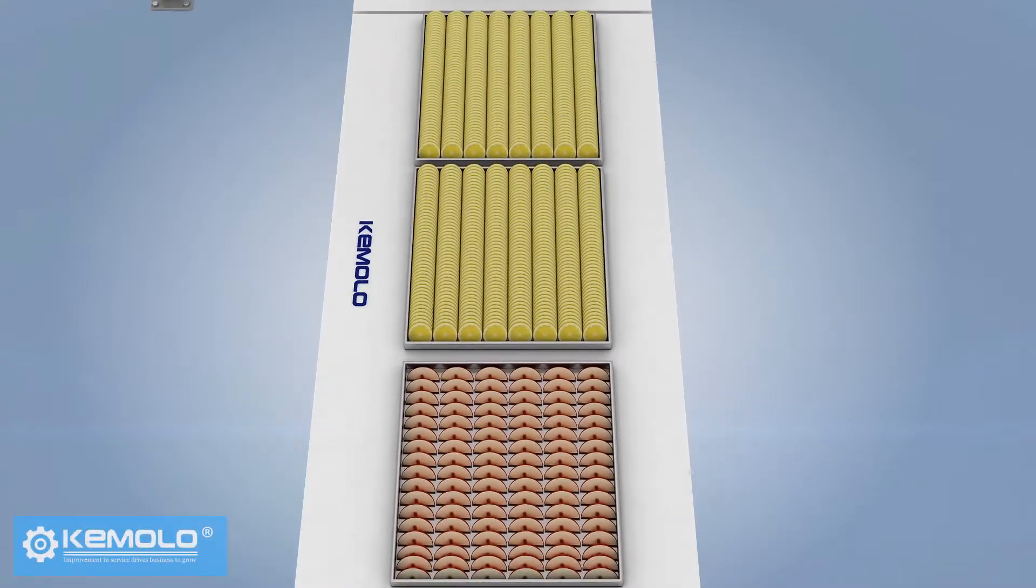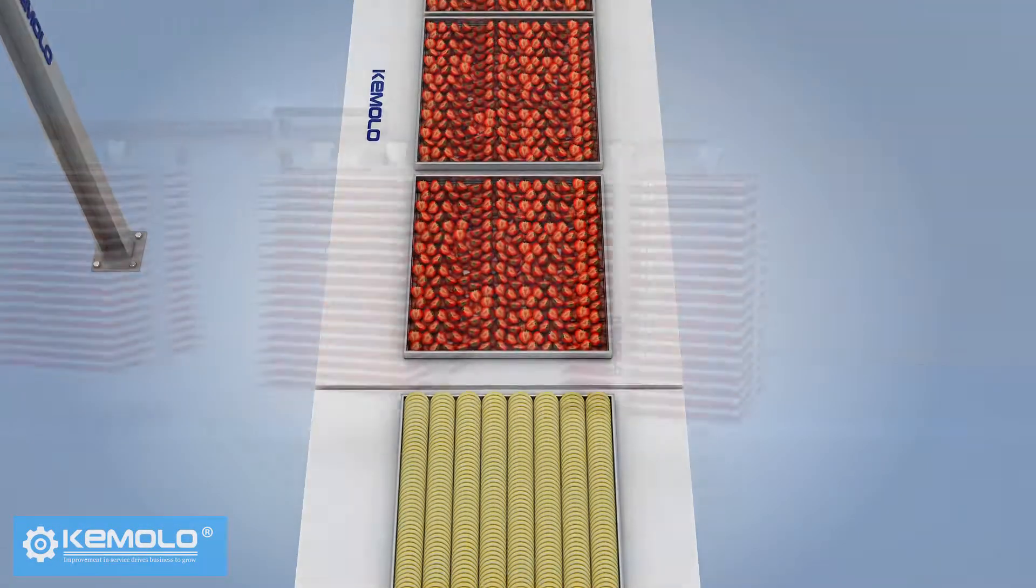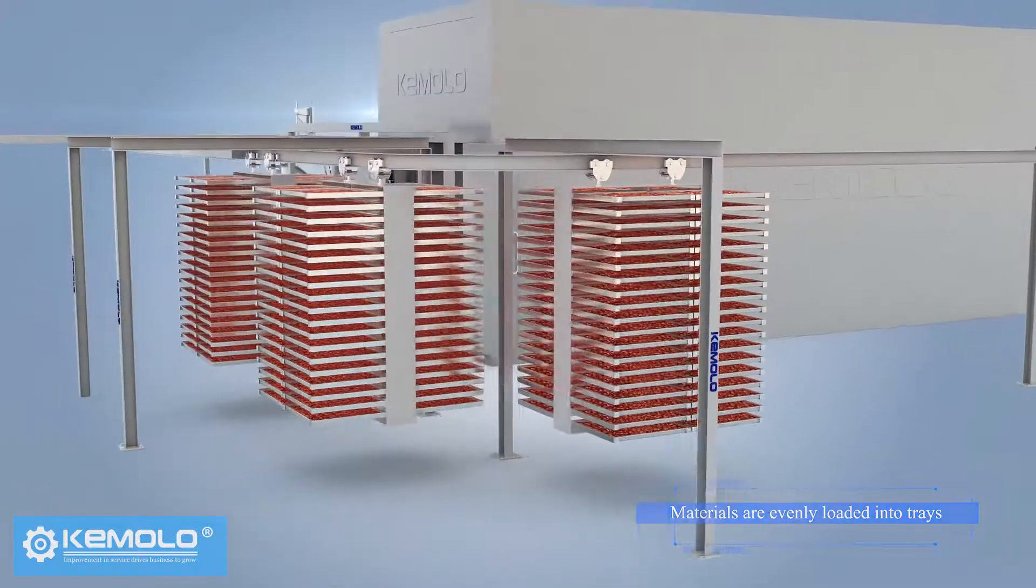First, wash and slice fruits, vegetables, or other pre-processed materials evenly and load them into product trays.